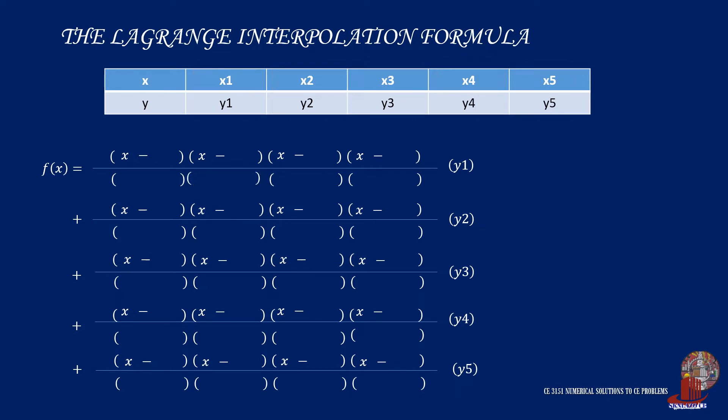Focus on the first term now. We isolate the first data point of x1 and y1. x1 will be the first term of each quantity in the denominator, and to complete the quantities, we subtract the remaining x values on each—minus x2 for the first quantity, minus x3 on the next, until x5 on the last quantity. These values from x2 to x5 will also be reflected in the numerator as the subtrahends for x.